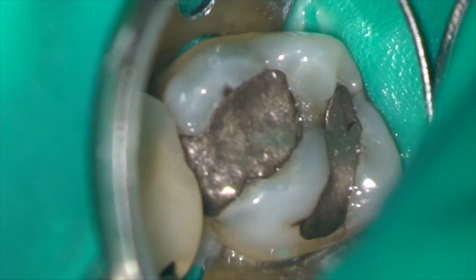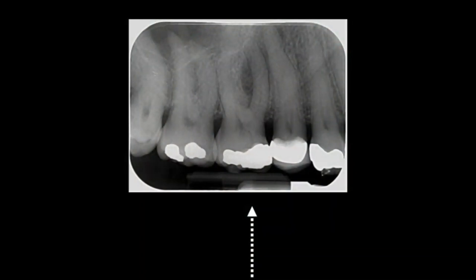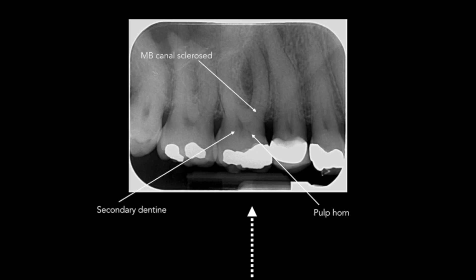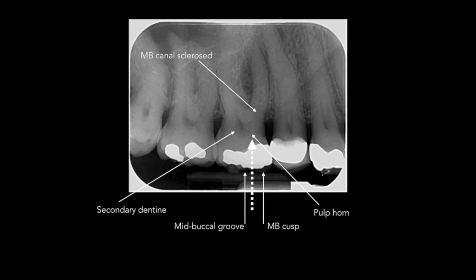Under the microscope you can see that I've isolated the tooth with rubber dam and this is the amalgam restoration. In this case I actually treated the maxillary right first molar and second premolar simultaneously. Similar to the last case there's reactive dentine in the pulp chamber and the root canals are sclerosed. I'm looking for a reference point that I can use to direct me in the direction of the pulp chamber when I'm making my access cavity.